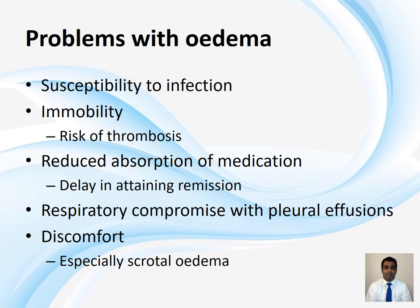Edematous children are immobile because they can have very significant limb edema and genital edema, making mobilization difficult. Immobility is a risk factor for thrombosis, and these patients are already prone to thrombosis due to loss of antithrombotic factors and hemoconcentration. So edema, through its causation of immobility, puts the edematous nephrotic at risk of thrombosis as well.